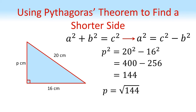Square rooting this gives us an answer of P equals 12 centimetres. And again, let's just check our numbers. The hypotenuse should be the longest side. 20 centimetres is longer than 12 and 16, so our answer is a sensible one.